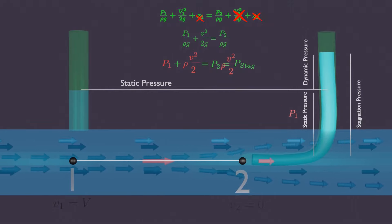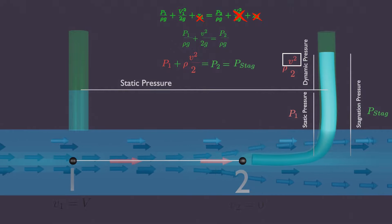Now we can measure the velocity of moving water V, if we know the dynamic pressure. And it can be easily calculated by measuring pressure head.